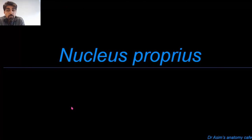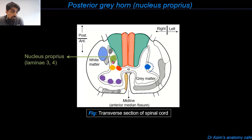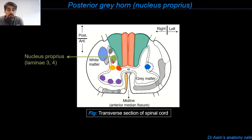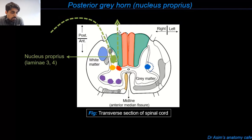Now let's talk about the nucleus proprius. The nucleus proprius group of cells is situated anterior to the substantia gelatinosa, color coded in green, and constitutes the main bulk of cells in the posterior gray column. Like the substantia gelatinosa, the nucleus proprius is present throughout the length of the spinal cord. The cells in the nucleus proprius are linked with sensory neuronal pathways carrying touch information pertaining to vibration, proprioception, and two-point discrimination. These neurons travel through the spinal nerve and posterior root to enter the posterior horn.